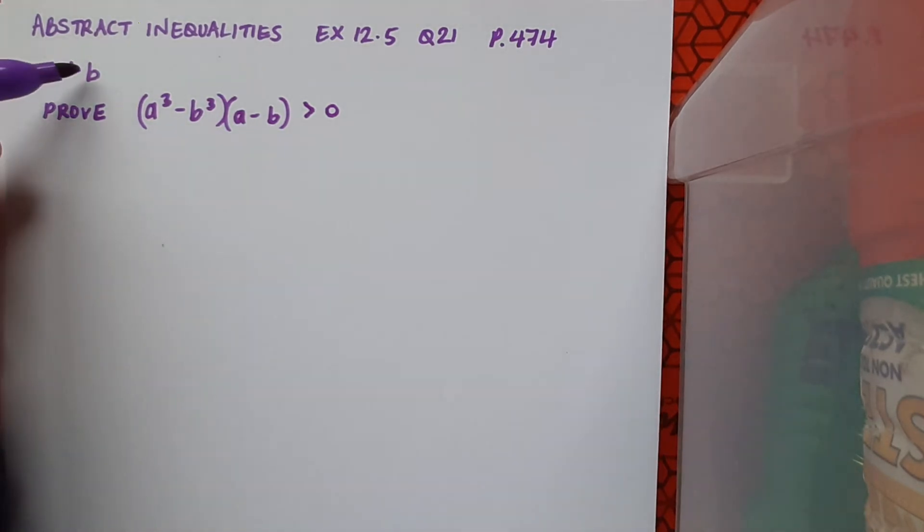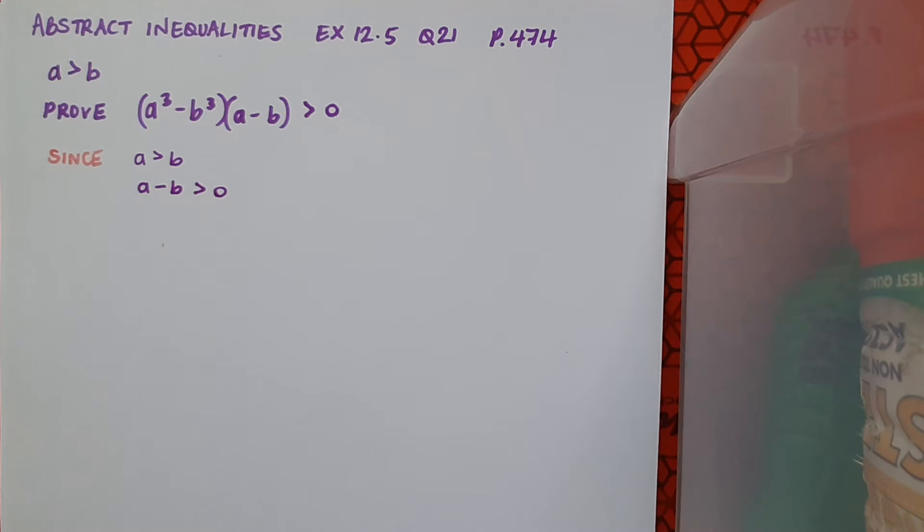First of all, if a is greater than b, I can take this inequality and manipulate it, and I can say that it must mean that a minus b is greater than zero, so that's just bringing the b across to the left-hand side. So this means that a minus b is positive.